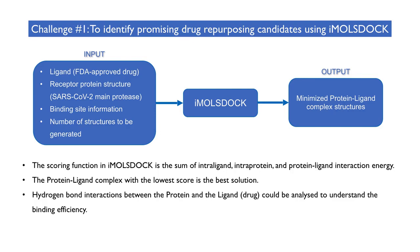The fourth input is the number of structures to be generated. The output from IMALS DOG is the minimized protein-ligand complex structures. The scoring function in IMALS DOG is the sum of intraligand, intraprotein, and protein-ligand interaction energy.